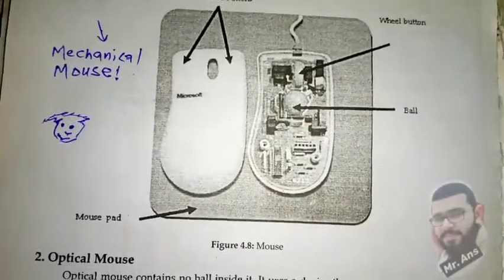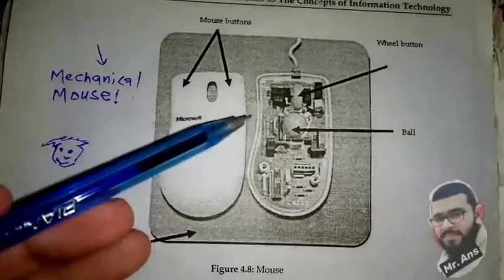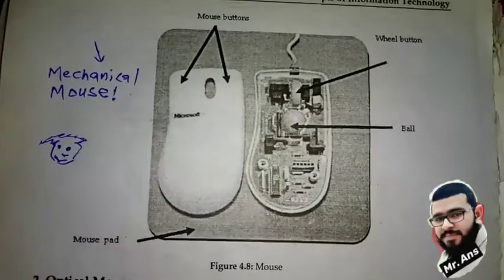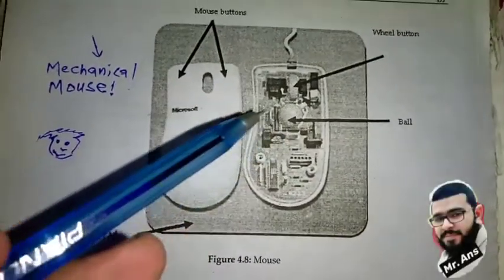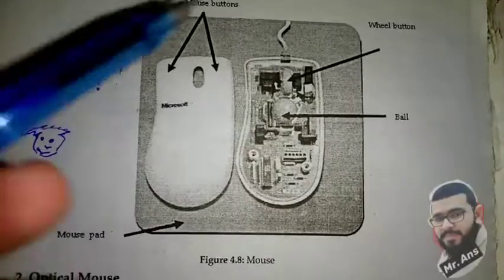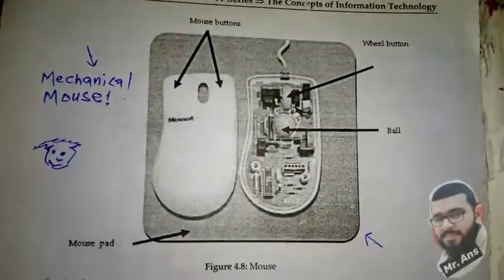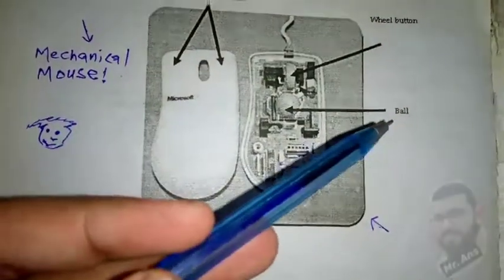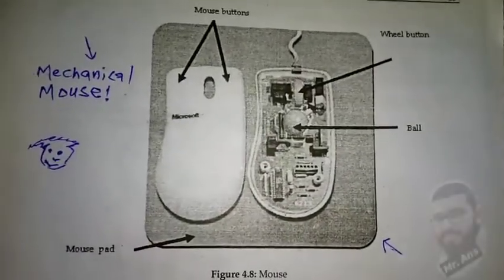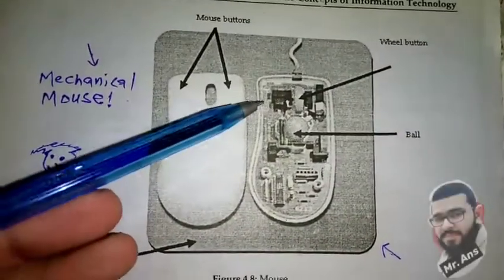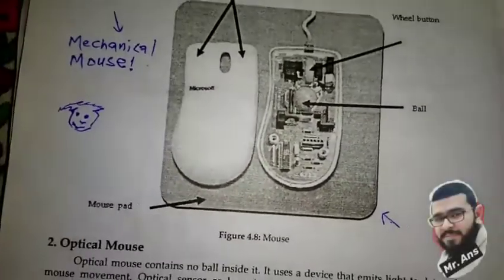There are different types of mouses. The first type is the mechanical mouse. In the mechanical mouse we have a ball inside, and when this ball moves it controls the cursor on the screen. This is the mouse pad where we place the mouse so the ball can easily rotate and move the cursor on the screen.